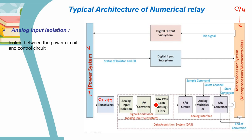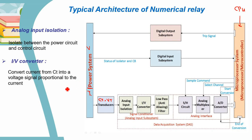Then we have the I-to-V converter — current to voltage converter. The numerical relay only deals with voltage signals, so the I-to-V converter is used to convert the current from the current transformer into a voltage signal proportional to the current. Any signal except a voltage signal must be converted into a proportional voltage signal.